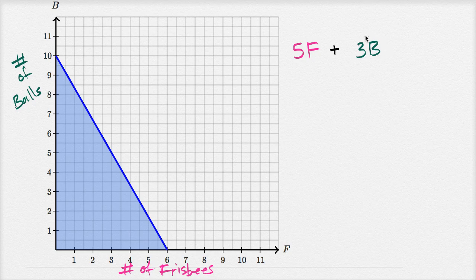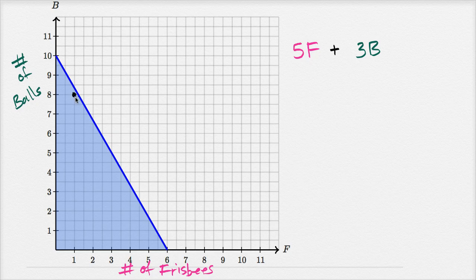5f is the number of biscuits from frisbees and 3b is the number of biscuits from balls. We can see all allowable combinations of frisbees and balls on the graph. For example, if she retrieves eight balls and catches one frisbee, that's still okay — she hasn't yet met her maximum. The maximum number of biscuits corresponds to points sitting on the boundary line, and all points satisfying the inequality are below this line.